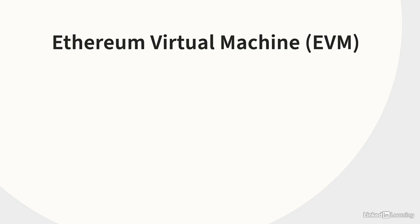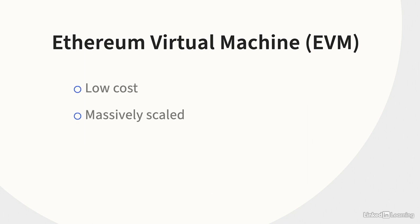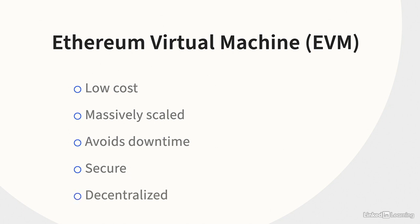Participant computers are collectively known as the Ethereum Virtual Machine, or EVM. Unlike traditional client-server architectures — the centralized systems used to support most of the world's computing needs today — the EVM is low-cost, massively scaled, avoids downtime, and secure from the outset. Most notably, however, it is independent of any central authority, with code being the arbiter of trust.